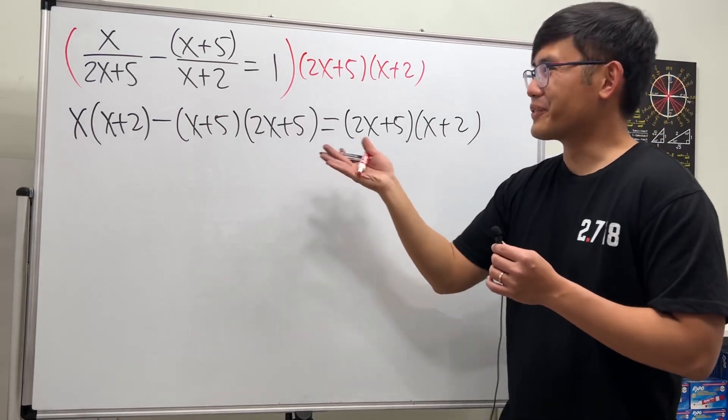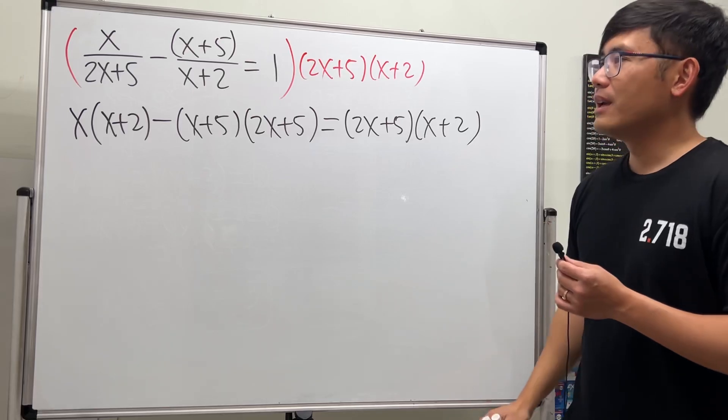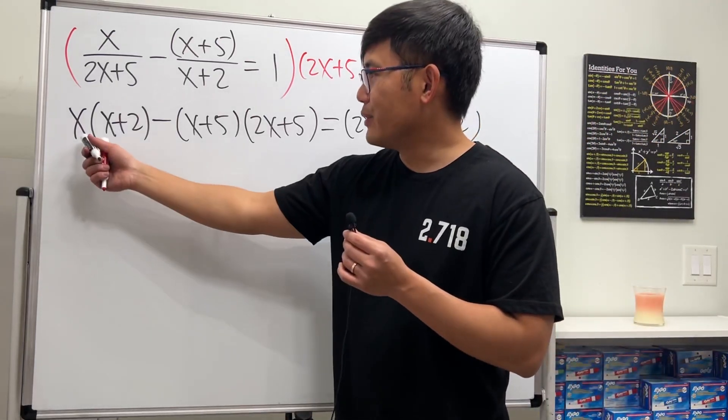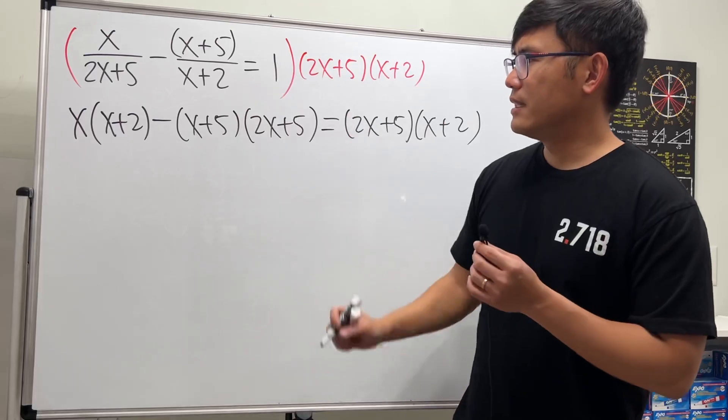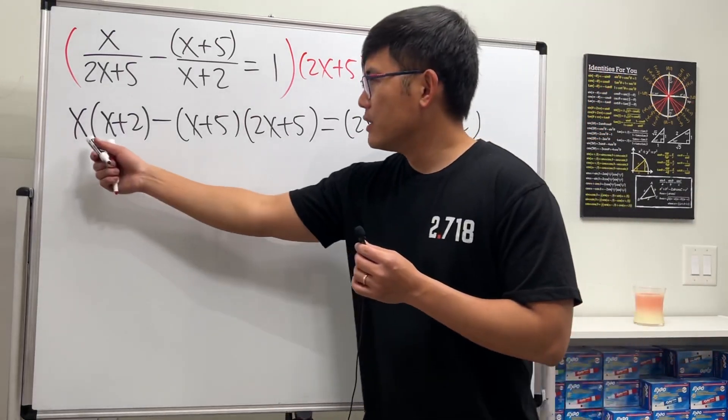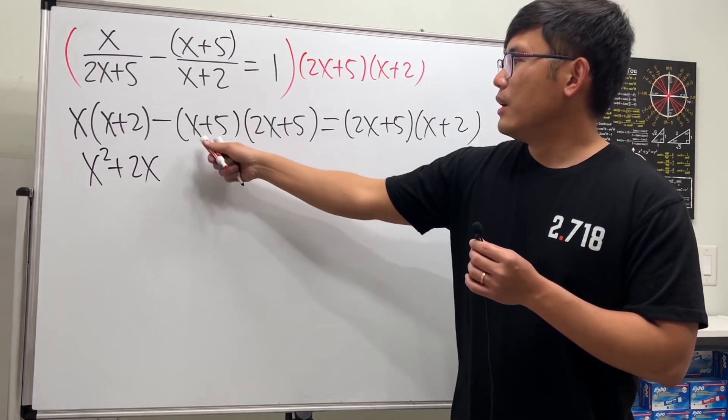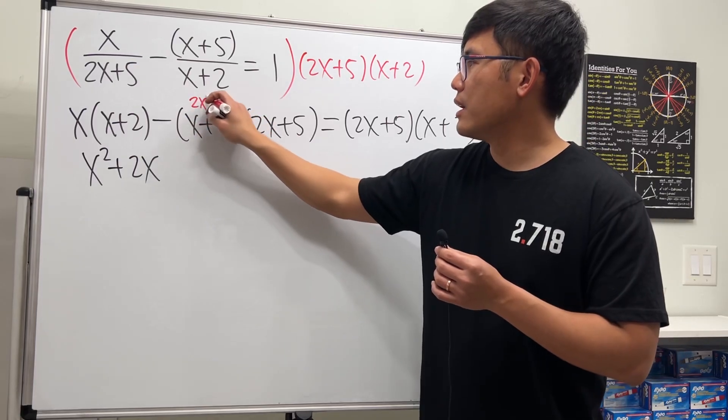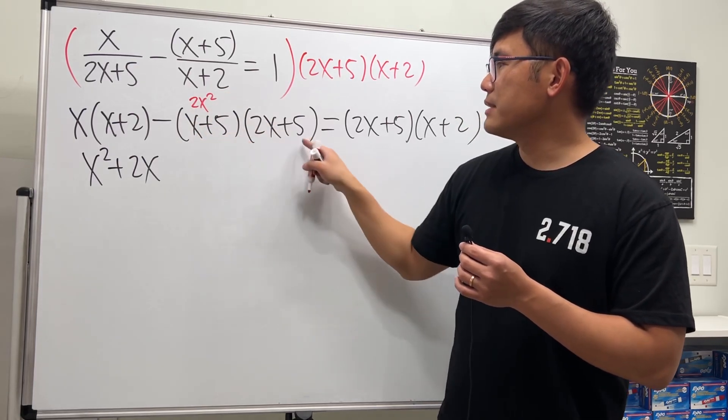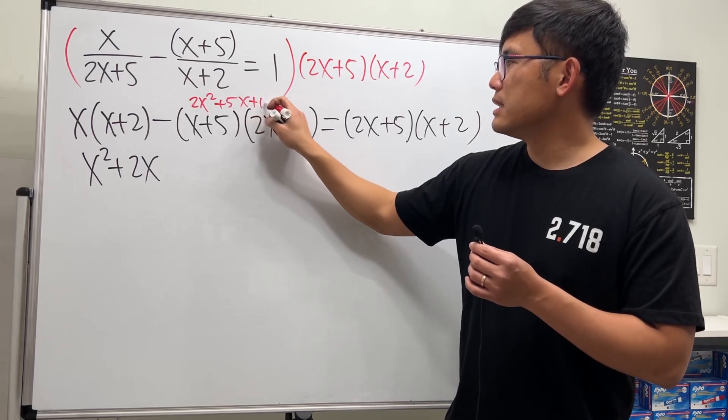So no more fractions, right? But yeah, these kind of equations are usually pretty long, but it's okay, we can do it. Continue—multiply out everything and then combine the terms. So x times that: x squared plus 2x. Multiply this out: x times 2x, we get 2x squared.